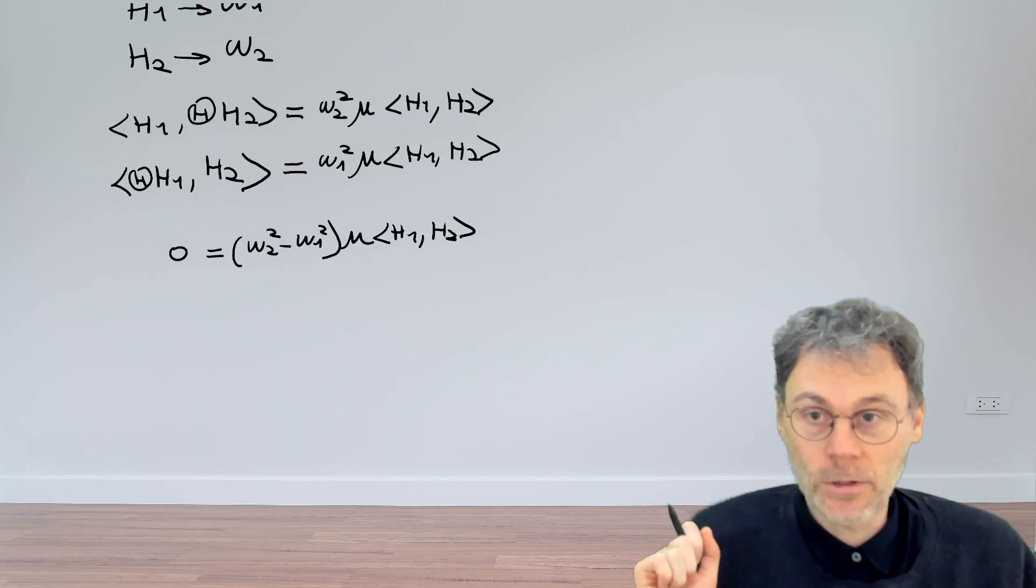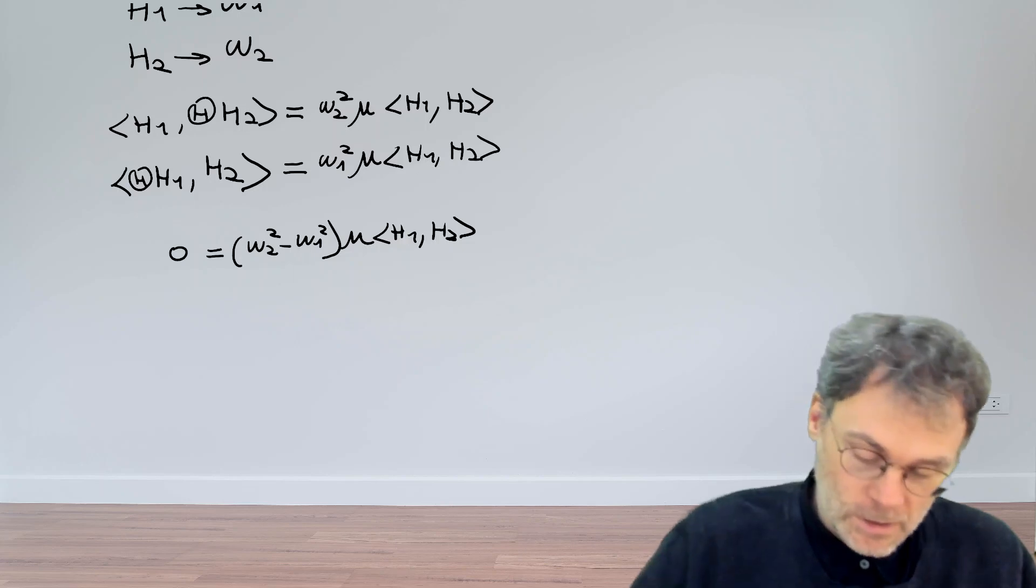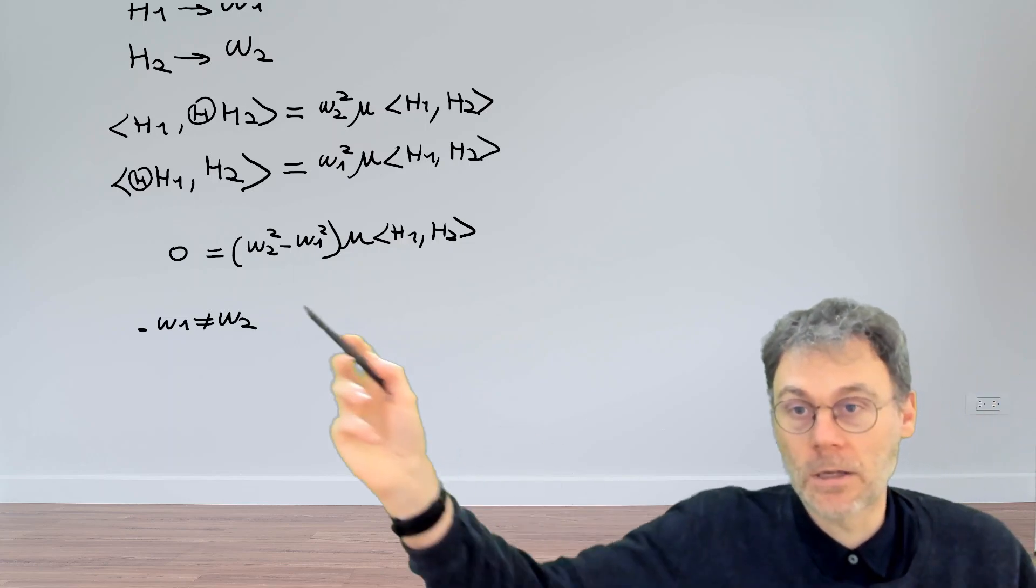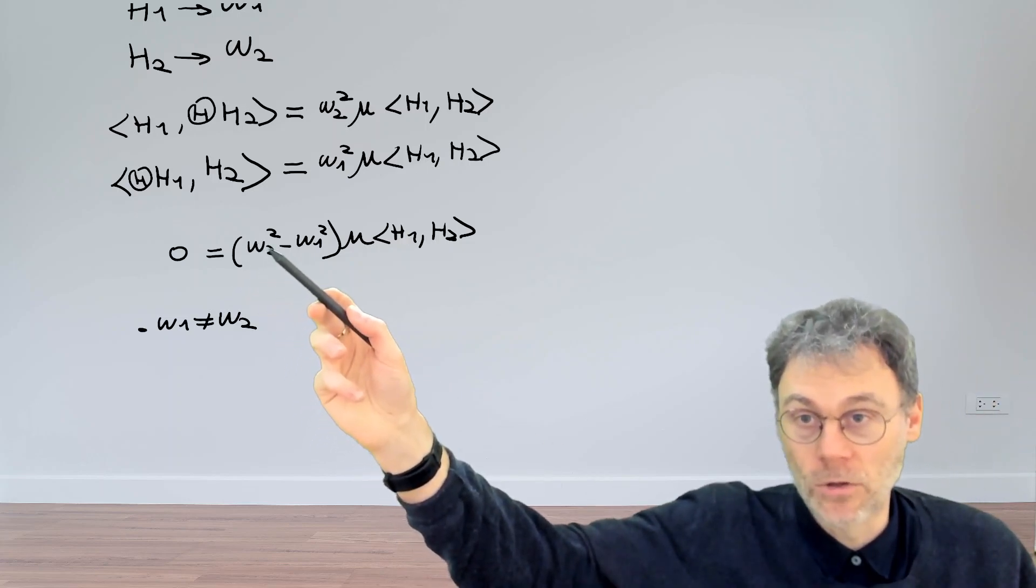So now we're almost there, but we need to be a little bit careful. Let's first have a look at the situation where omega 1 is different from omega 2. And therefore, this factor over here is not zero.